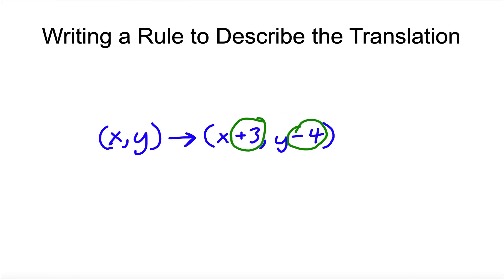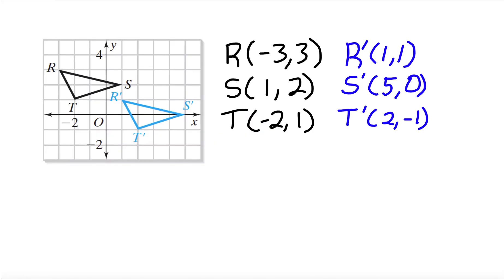So let's look at an example here and figure out what we're going to do. So here we have a shape. We have RTS and it moves here to R prime, T prime, and S prime. So what I've done is I've written out the coordinates ahead of time so we can figure it mathematically what it's doing or just look at the shape.